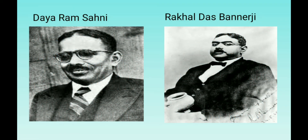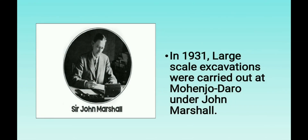It was later in 1921 that Indian archaeologist Daya Ram Sahni understood the importance of the site and excavated the ruins of Harappa on the banks of river Ravi in western Punjab. In 1919 to 1920, Rakaldas Banerjee, an officer of the Archaeological Survey of India, came upon the remains of another ancient city in Mohenjo-daro. Under the supervision of John Marshall, large-scale excavations were carried out at Mohenjo-daro in 1931.